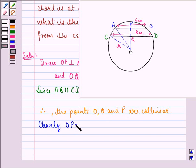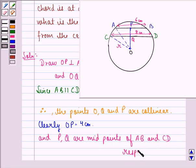Clearly, OP is equal to 4 cm because it is given in the question that the smaller chord, AB, is at a distance 4 cm from the center. So P and Q are midpoints of AB and CD respectively. This happens because if a line is drawn from the center of a circle to a chord such that the line is perpendicular to the chord, then it bisects the chord.